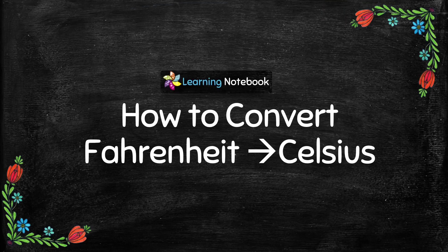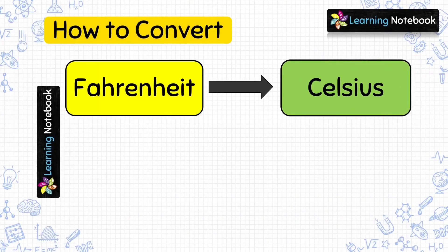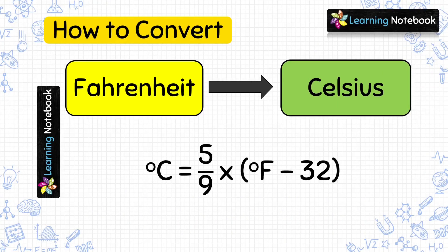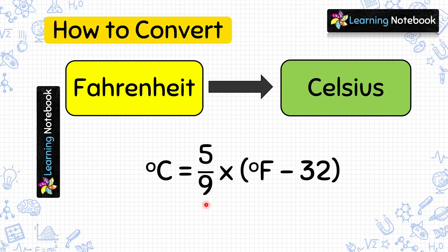Now we are going to do a very important topic: how to convert temperature given in Fahrenheit into Celsius. The formula to convert Fahrenheit to Celsius is: 5/9 multiplied by (Fahrenheit minus 32). This formula has two parts — first we do subtraction, then multiply the result by 5/9.